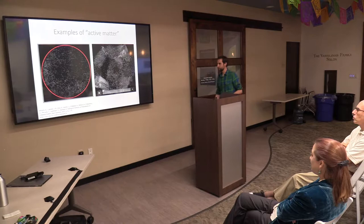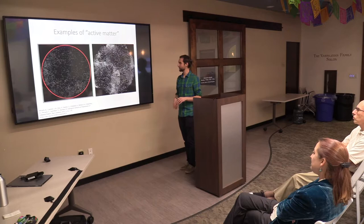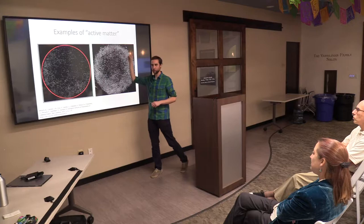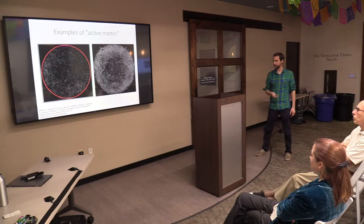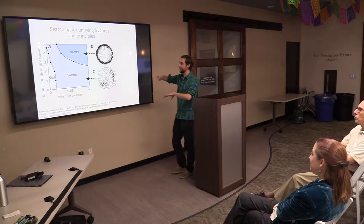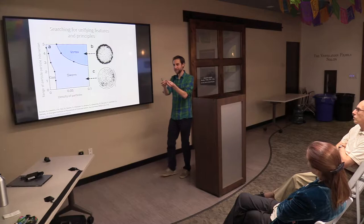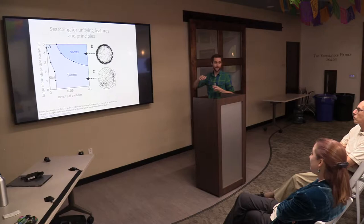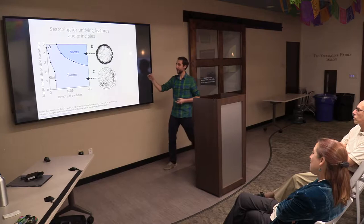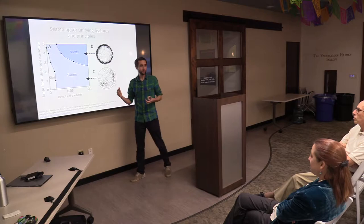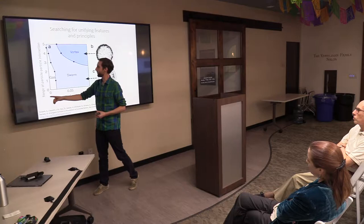What a physicist likes to look at is something like a phase diagram or state diagram that characterizes and reduces the complexity. Here I have density of particles versus the range of particle-particle interaction — how close two particles have to get before they feel each other. If it's really dense, I might get a vortex forming. If it's not so dense but still dense enough, I might get a swarm. Not so dense, a gas would be just non-interacting.